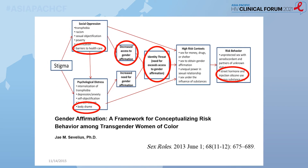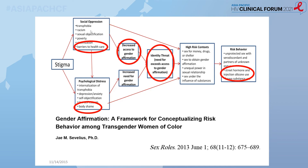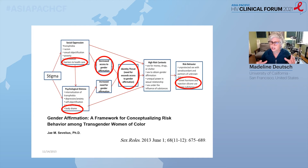This is called the model of gender affirmation, developed by Dr. Sevelius at UC San Francisco. It describes how stigma, psychological distress, oppression, and decreased access to gender affirmation — in the context of an increased need for gender affirmation — creates an identity threat. This excess unmet need for gender affirmation can be directly linked to high-risk contexts and risk behaviors that put patients at risk of HIV. This pathway could also explain behaviors that are self-harming more broadly. Trauma, stigma, shame, and discrimination are all interrelated and result in behavioral issues, as well as challenges with linkage to care, engagement in care, and self-care.